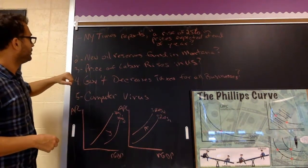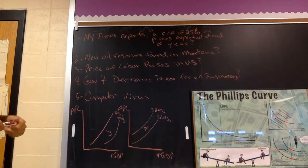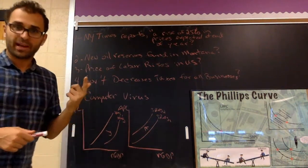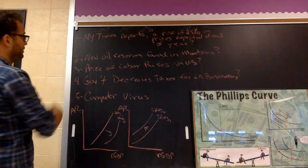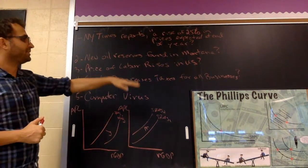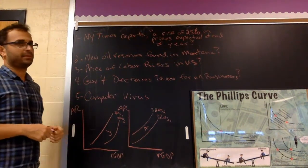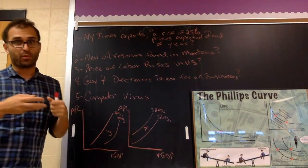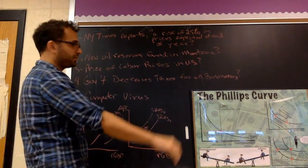Number three, price of labor rises in the U.S. If the price of labor is going up, input costs are going up. Aggregate supply shifts to the left. Government decreases taxes for all businesses. If they're decreasing taxes, that means businesses can invest and spend more in their company. Aggregate supply shifts to the right.